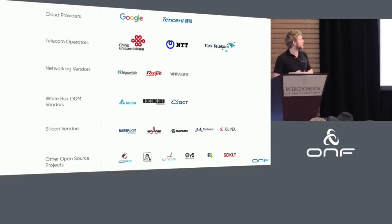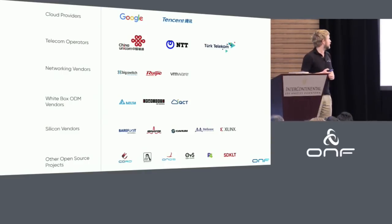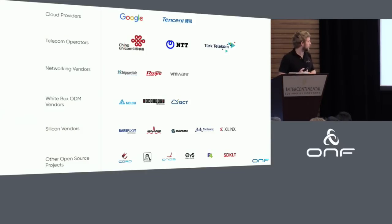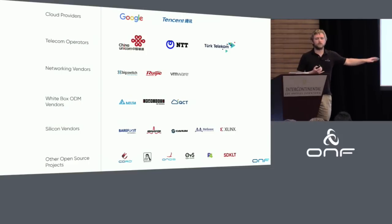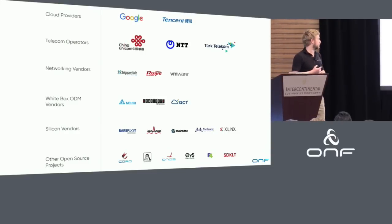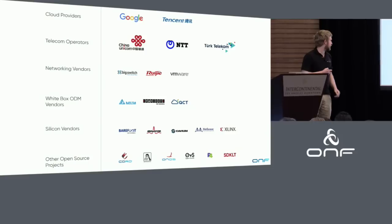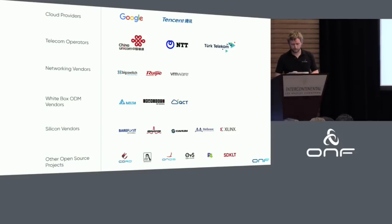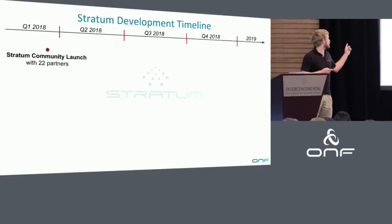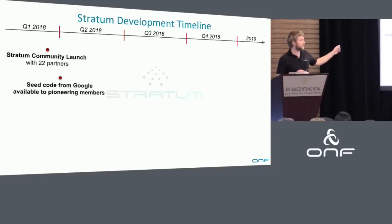We've got a great set of partners. Google is one of the big cloud providers. There are a number of telecom partners that have already joined the project. From a whitebox ODM side, we've got Delta, Edgecore, QCT, a whole bunch of silicon vendors committed to providing implementations that map the Stratum APIs down to their individual chip SDKs, and a number of open source projects we're collaborating with. Two weeks ago we launched the community. We expect the seed code will be available for pioneering members at the end of this month.